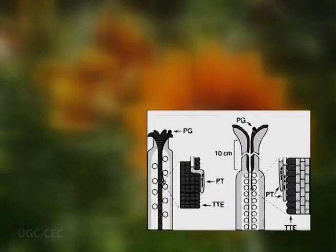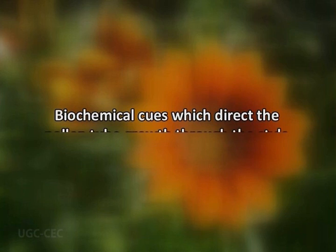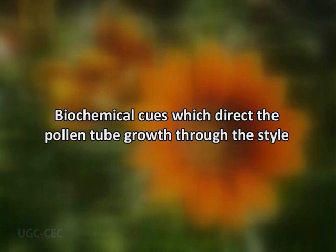After arriving in the style, the pollen tube grows towards the ovary through the intercellular spaces of the transmitting tissue, where the elongated cells are piled into parallel files. This path of the pollen tube was earlier thought to be a mechanical one, determined by the transmitting tissue. But now it is known that there are biochemical cues which direct the pollen tube growth through the style.